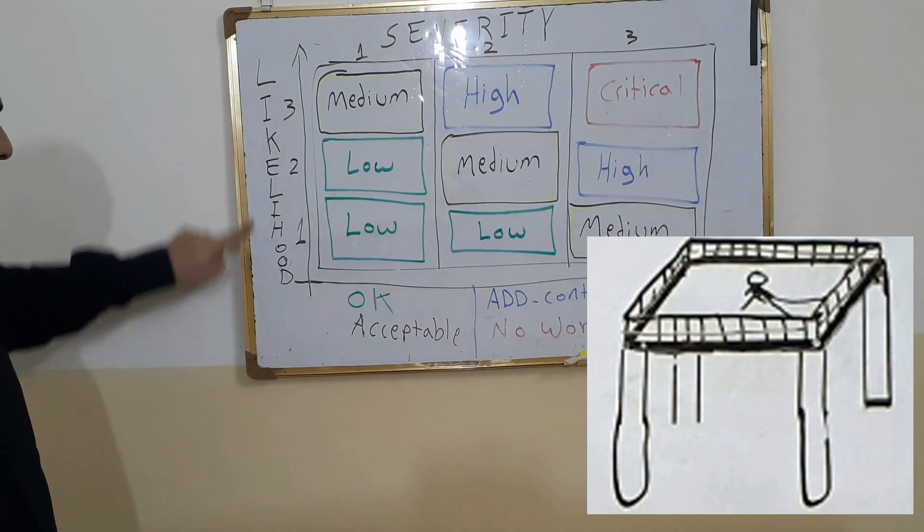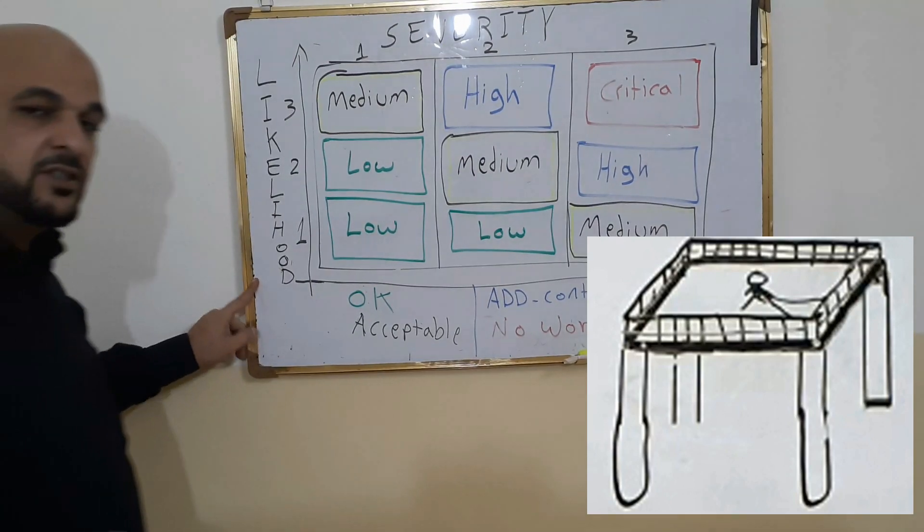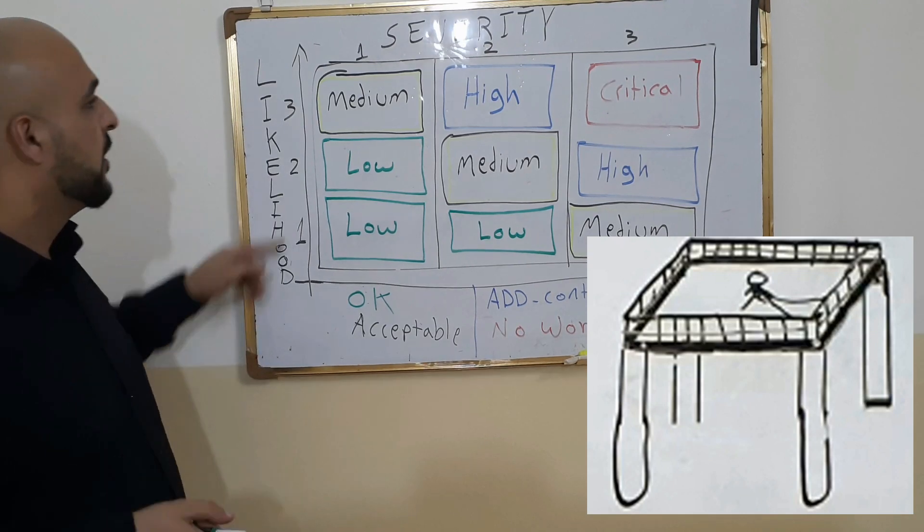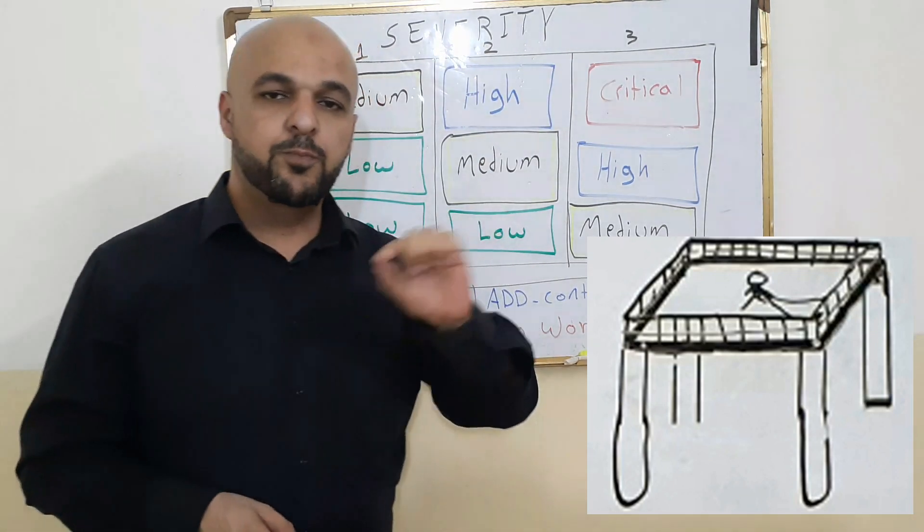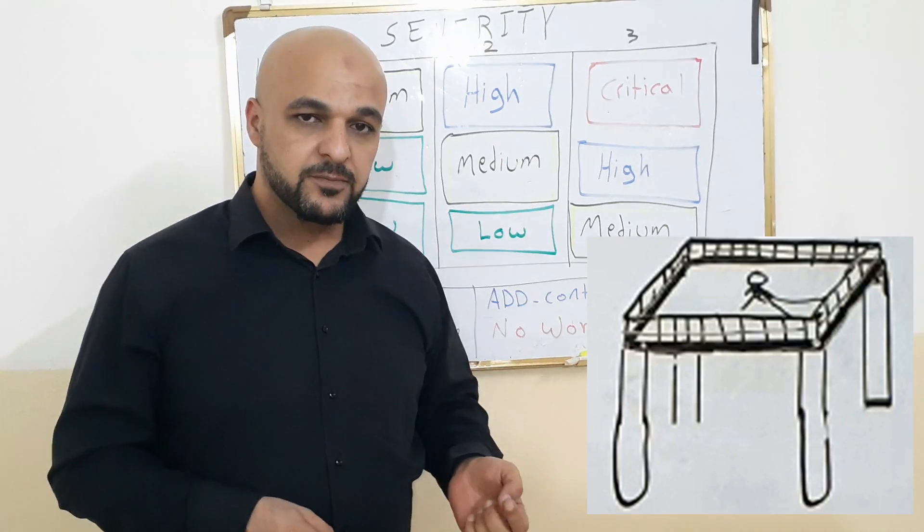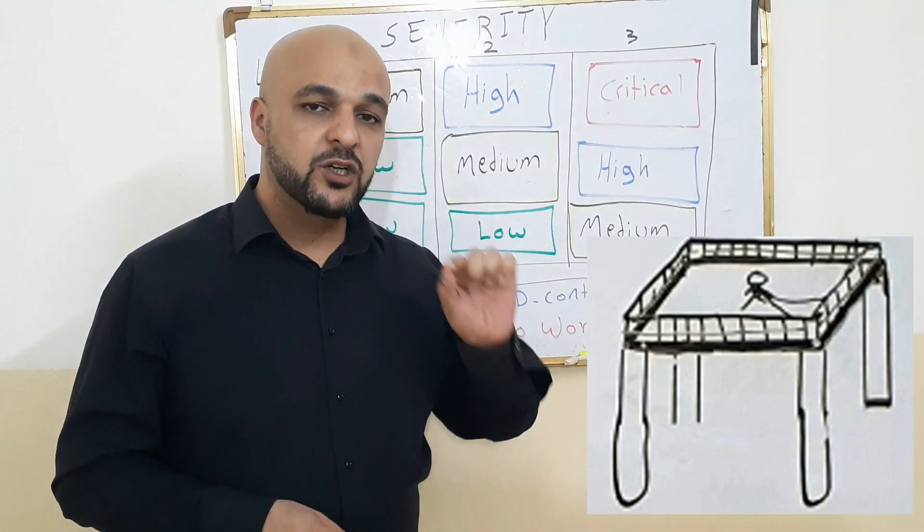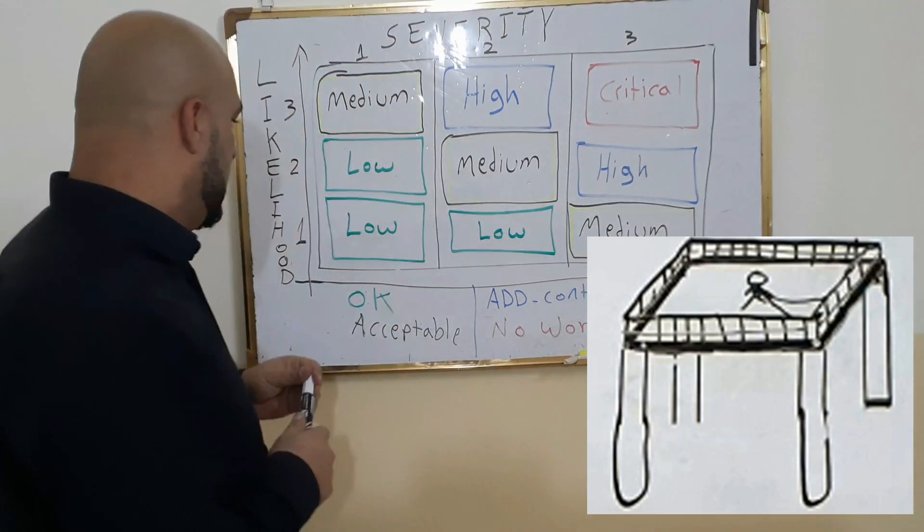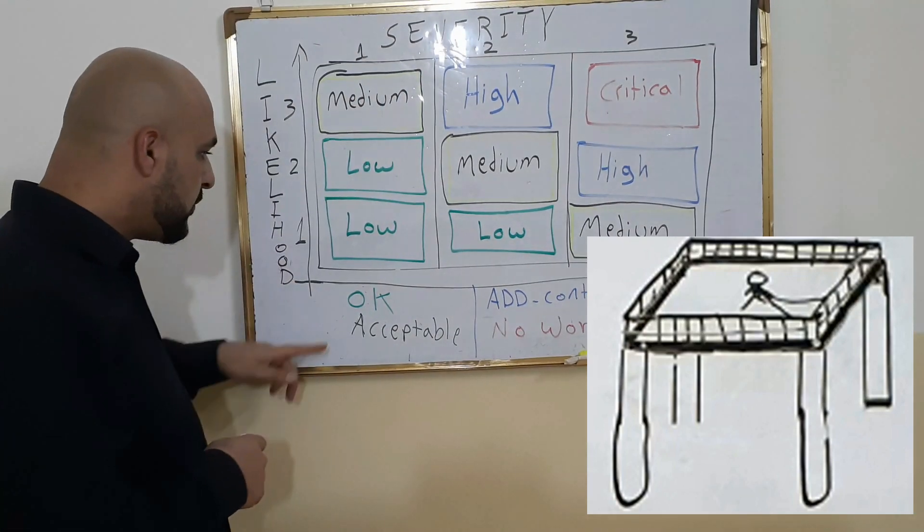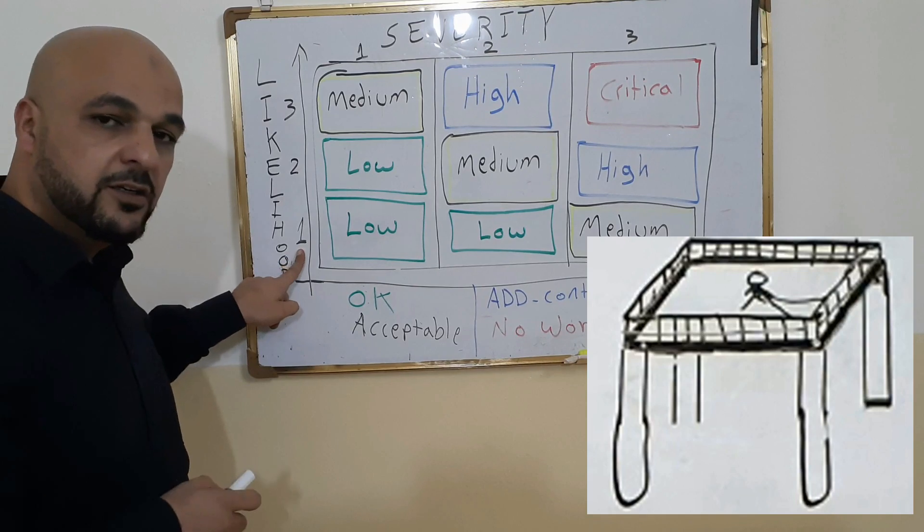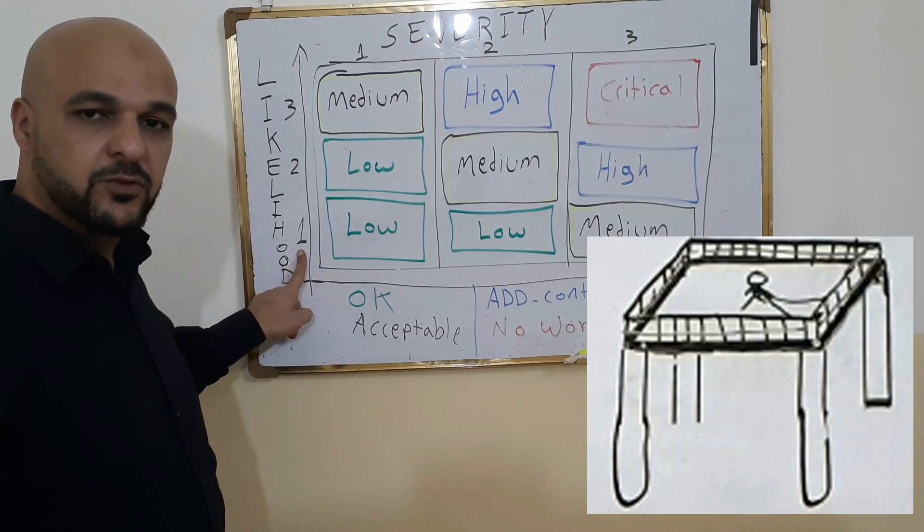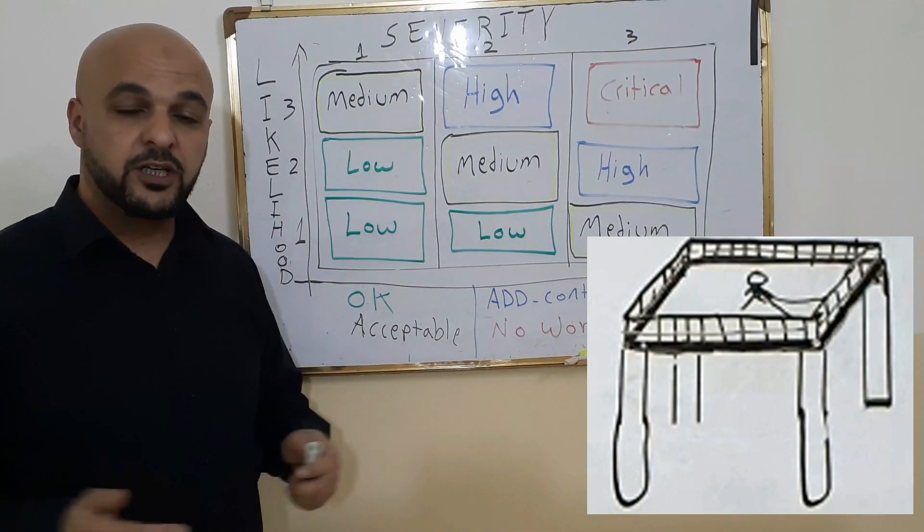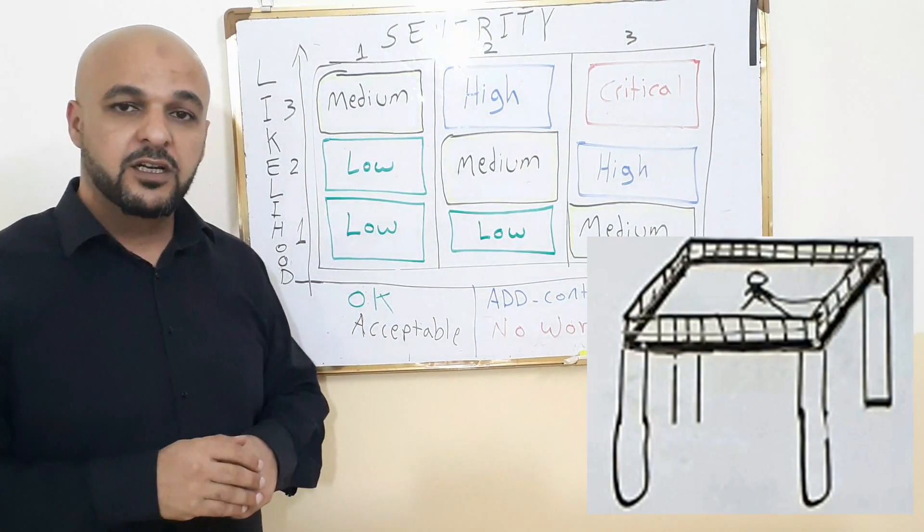So, likelihood. This tells us how likely is it for him to fall. The severity tells us how bad will the fall be. How bad will his fall be? Number one says it's not likely for him to fall. He's not going to fall because he's protected and inshallah he will not fall.